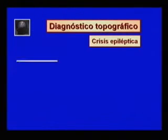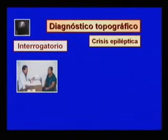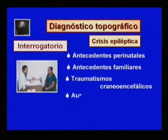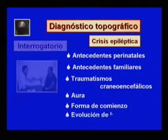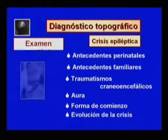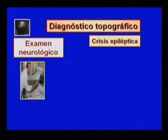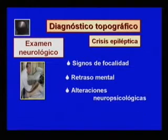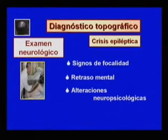La realización del diagnóstico topográfico de las crisis epilépticas se sustenta en un interrogatorio donde es indispensable precisar antecedentes perinatales, antecedentes familiares de epilepsia, traumatismos craneoencefálicos, presencia de aura y formas de comienzo y evolución de las crisis. También en la realización de un examen neurológico donde se deben buscar signos de focalidad, retraso mental y alteraciones neuropsicológicas. Estos aspectos deben revisarse en el libro de texto para relacionar las manifestaciones focales con los sitios correspondientes de disfunción cerebral.